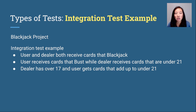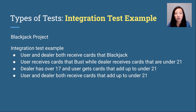The dealer has over 17 and the user gets cards that add up to under 21. The user and dealer both receive cards that add up to 21. And the user and dealer both receive cards that bust.